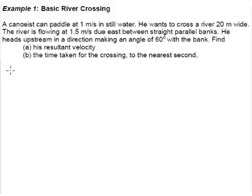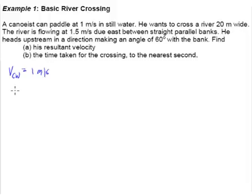As you read, you always filter out the information. The three sides of the triangle — first and foremost, we know that the canoe relative to the water is 1 meter per second. The next piece of information is that the river is flowing at a speed of 1.5, so the river gives us our V_W, the water velocity, which is 1.5 meters per second.